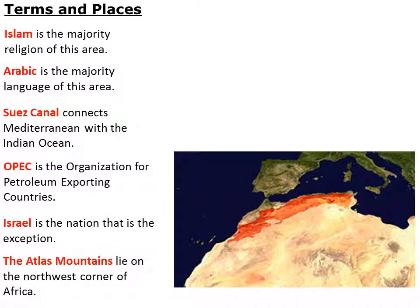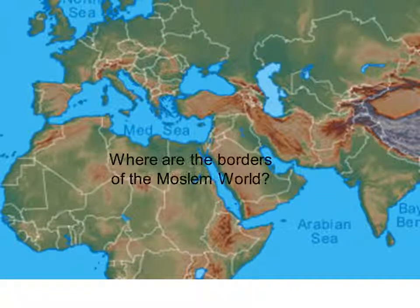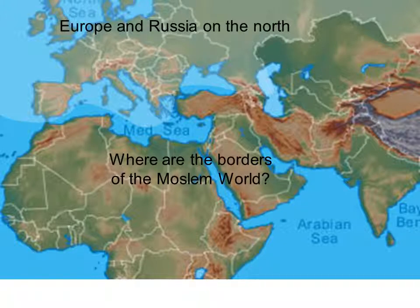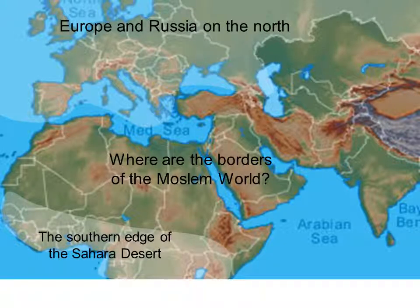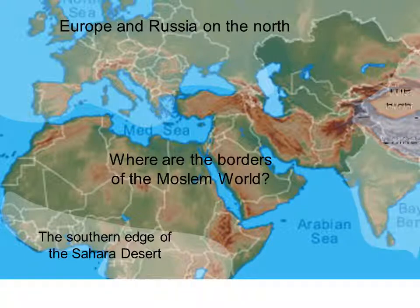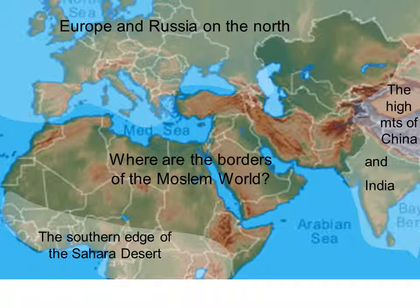The Atlas Mountains lie in the northwest corner of Africa. Where are the borders of the Muslim world? You've got Europe and Russia on the north, and it extends all the way down to the southern edge of the Sahara Desert. On the east, it ends at the high mountains of China and at India.